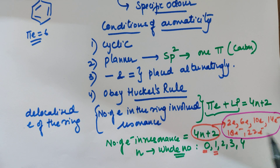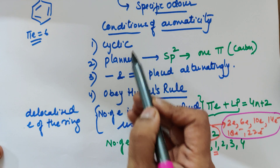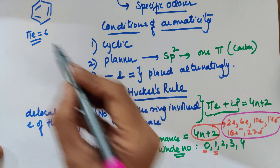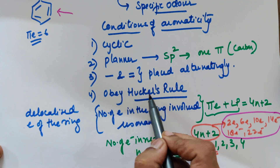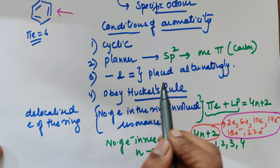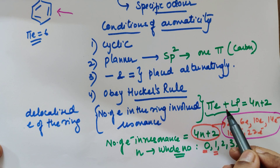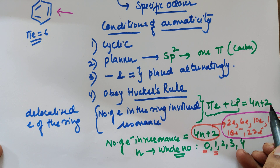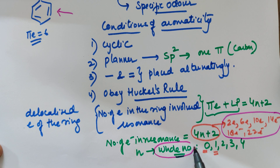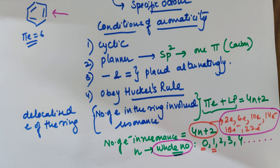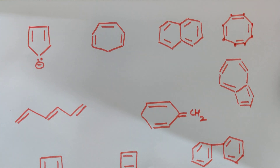To summarize: a compound is aromatic if it is cyclic, planar (sp2 hybridized carbons), has alternating single and double bonds, and obeys Hückel's rule — meaning the total of pi electrons and lone pairs involved in resonance for ring atoms equals 4n + 2, where n is a whole number starting from 0. Let me now explain these conditions with examples.